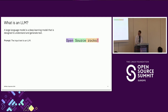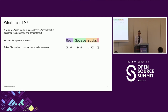We first need to define some key terms we are going to use throughout this presentation. The first one is prompt. A prompt is typically a text that you feed into an LLM — for instance, a simple prompt like "open source rocks." But eventually the LLM doesn't work with raw text; it first needs to convert such text into tokens, into a sequence of tokens. A token is a small unit that represents a chunk of characters, and a token is a number.